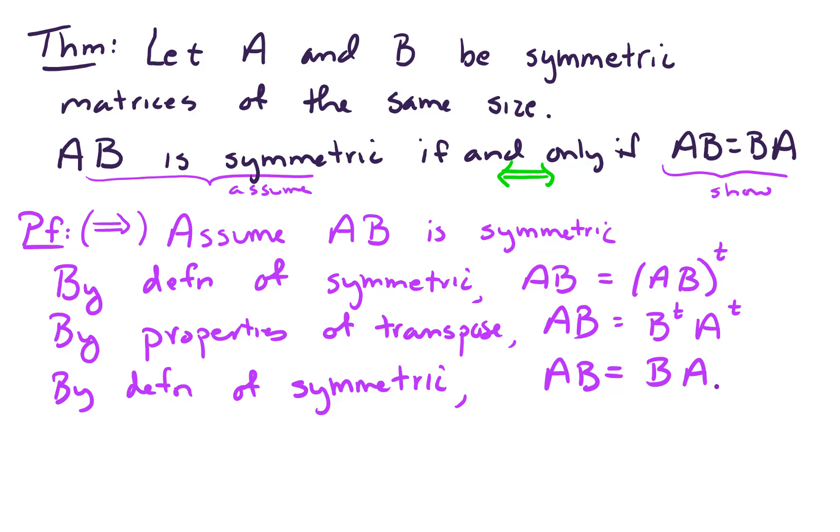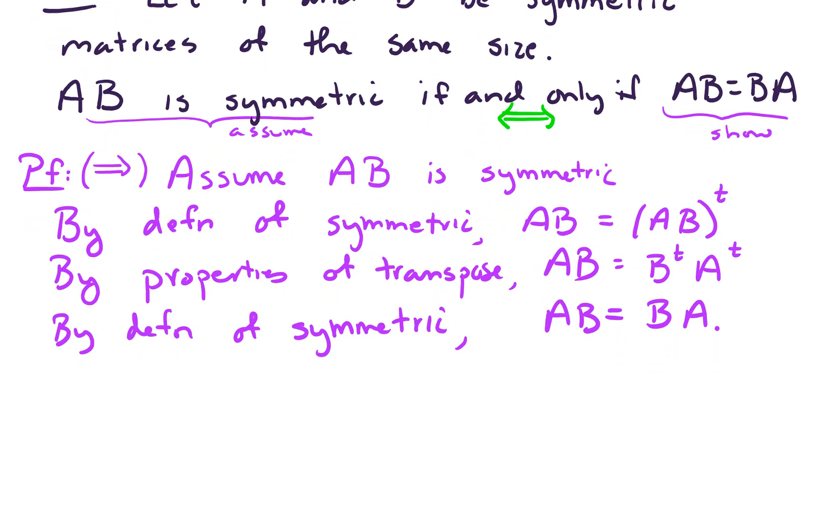Great, so we've done our proof for one direction. Now we need to go in the other direction. So this is an if and only proof. We need to go in both directions. So now we're going to prove the converse. Namely, we're going to assume that AB equals BA. And what we want to show is that AB is symmetric. So let's assume that A times B equals B times A.